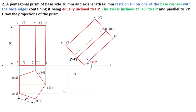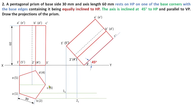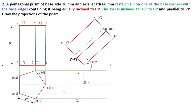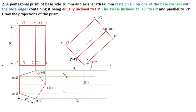Mark it as 1-1. The next corner is 2 in the front view and 2 in the top view — their meeting point is 2-1. Then 3 dash meets with 3, giving 3-1. Next, 4 dash meets 4 giving 4-1, and 5 dash meets 5 giving 5-1. The base pentagon 1, 2, 3, 4, 5 of the pentagonal prism is now completed in the top view.